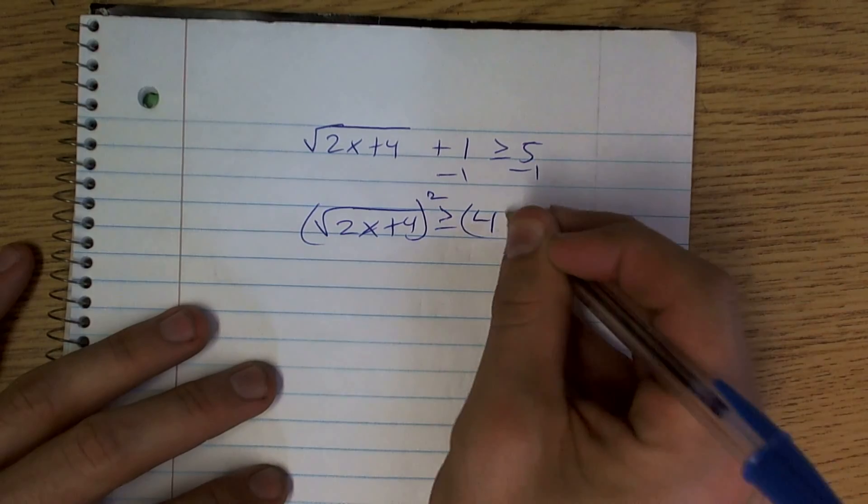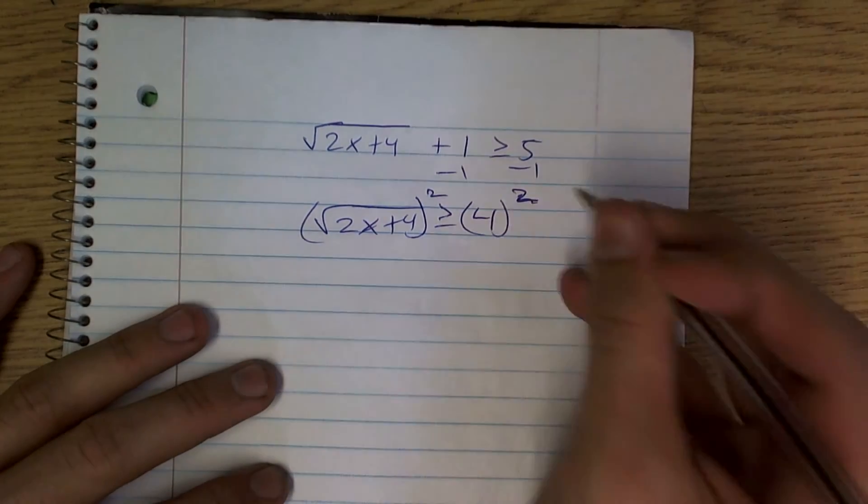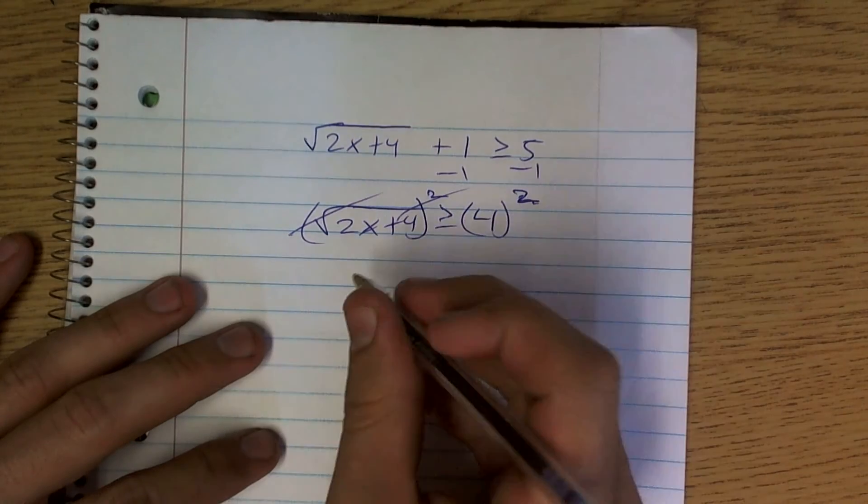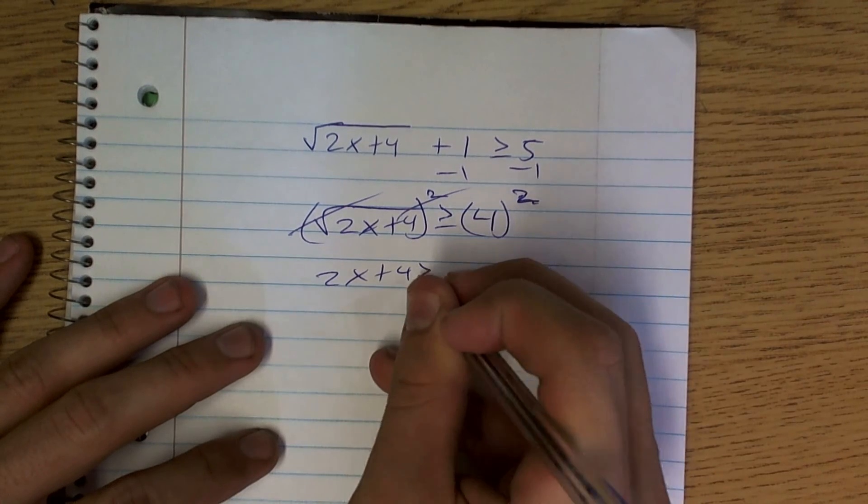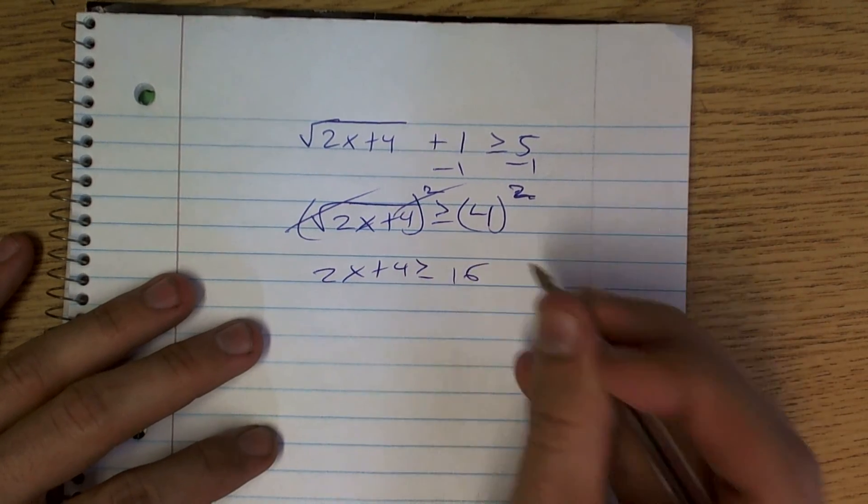Now we can square both sides. Gotcha. Okay? So now that's going to cancel out to 2x plus 4 is greater than or equal to 16.